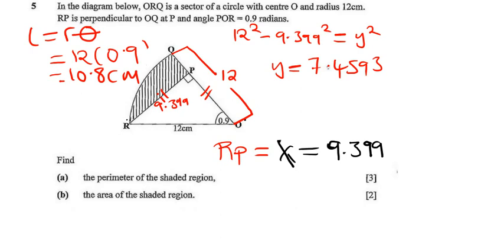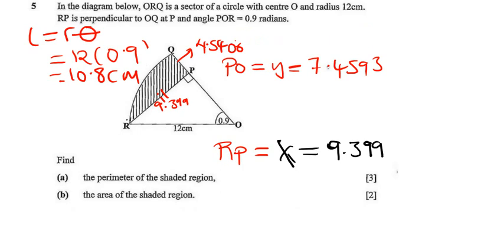So we found the value of RP. We've also found the length of PO. This is PO. Now we're interested in QP, which is the difference between the radius OQ and PO. So if we remove the 7.4 we have from the 12, the answer I'm getting as the length of QP is 4.5406.